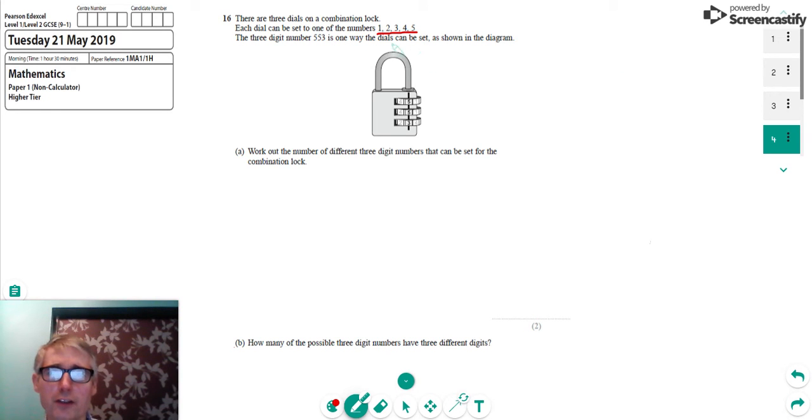It says here that we've got three dials on a combination lock and each dial can be set to one of these numbers: 1, 2, 3, 4, and 5. So an example would be the three-digit number 553, which is one of the ways the dials could be set.